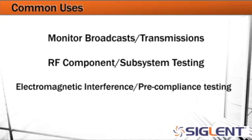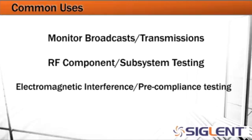And then we've got electromagnetic interference and pre-compliance testing. This is a little bit more specialized — this would be for companies or people that happen to be ready to sell their product. Governments will regulate the amount of interference or the amount of RF output over particular frequency ranges that a product is allowed to emit. So we want to make sure that we're underneath that particular limit line before we go through actually selling the product, because if it goes out into the field and it's not meeting those requirements it can be recalled and lead to fines.